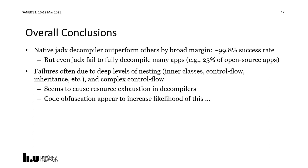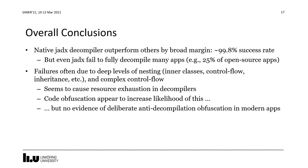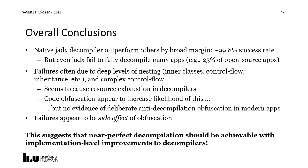Code obfuscation does appear to increase the likelihood of this, but we couldn't find any evidence of deliberate anti-decompilation obfuscation in modern apps — in contrast to what we observe on native code and for the Java Virtual Machine, where these techniques are quite common. It appears that failures are a side effect of the obfuscation rather than the intended effect. This is actually very good news, because it suggests that near-perfect decompilation should be achievable with implementation-level improvements to the decompilers to address these resource exhaustion problems. On that positive note, I conclude my presentation. Thank you very much for listening.